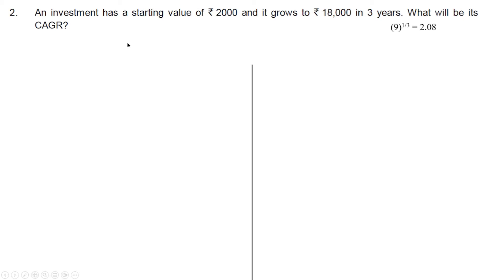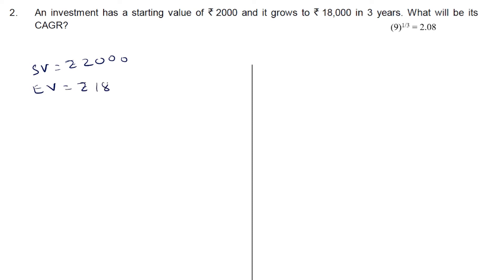Next question: an investment has a starting value of rupees 2000 and it grows to 18000 in 3 years. What will be its compound annual growth rate? Here again the starting value, ending value, and N are all given, so we can find the compound annual growth rate. The starting value is rupees 2000, the ending value is rupees 18000, and N is 3.